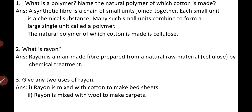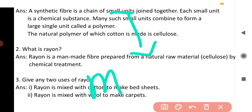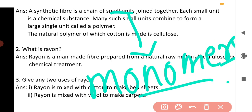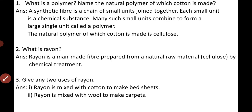Question one: What is a polymer? Name the natural polymer of which cotton is made. A polymer is a chain of small units joined together. Each small unit is referred to as a monomer. Many such small units combine to form a large single unit which is called a polymer. The natural polymer of which cotton is made is cellulose.